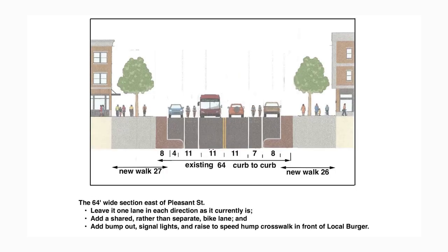The next section is the 64-foot wide section east of Pleasant Street, from the main intersection of Northampton over to the Market Street area. This is 64 feet wide and operates as one lane in each direction right now, and we see no reason to alter that — so it will stay one lane in each direction. There will be a painted bike lane so that cyclists have safer access. We will bump out the curb around the crosswalks, add signal lights, and raise the crosswalk in front of Local Burger into a speed hump.